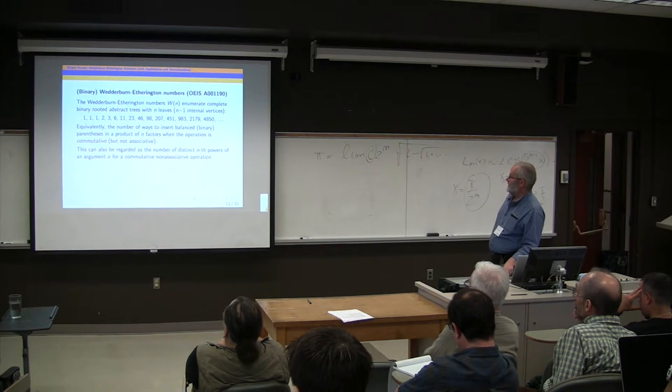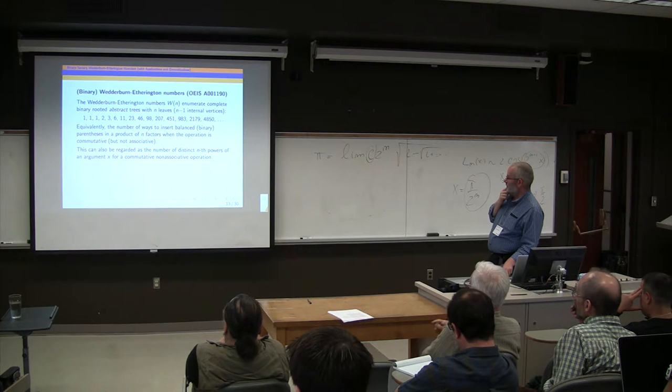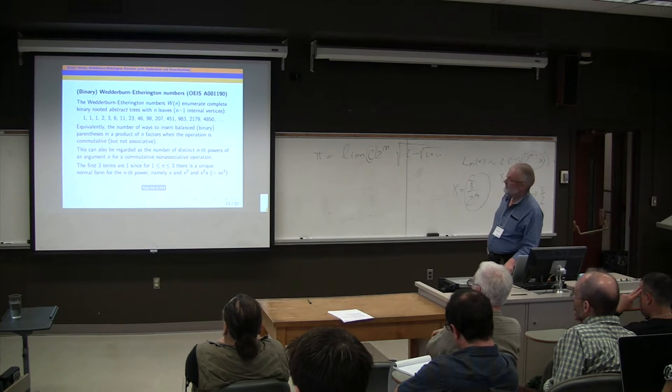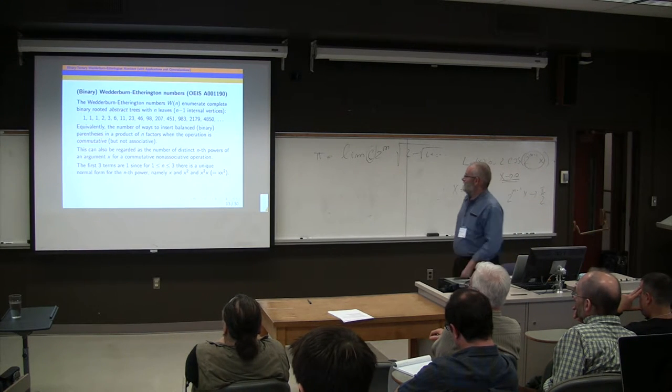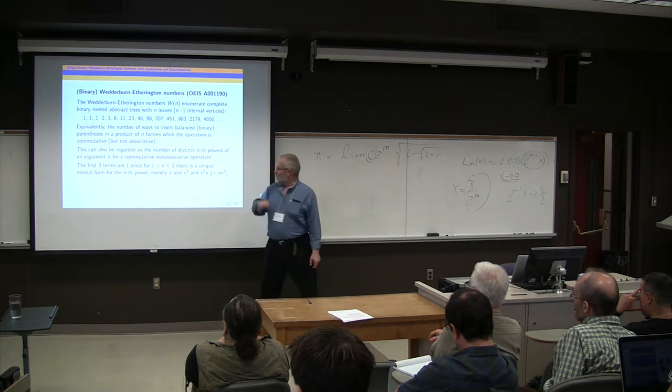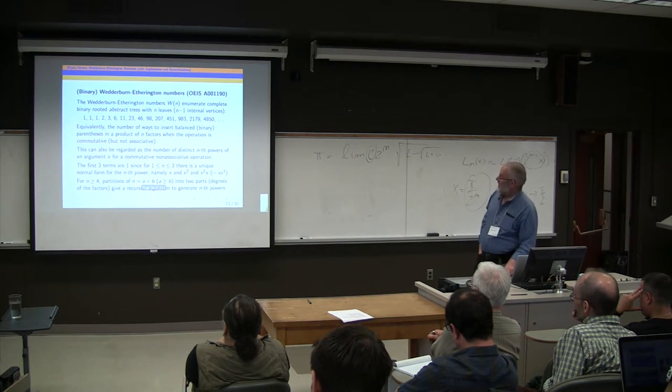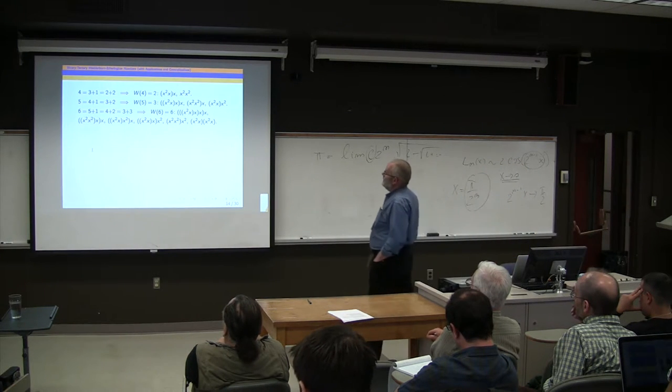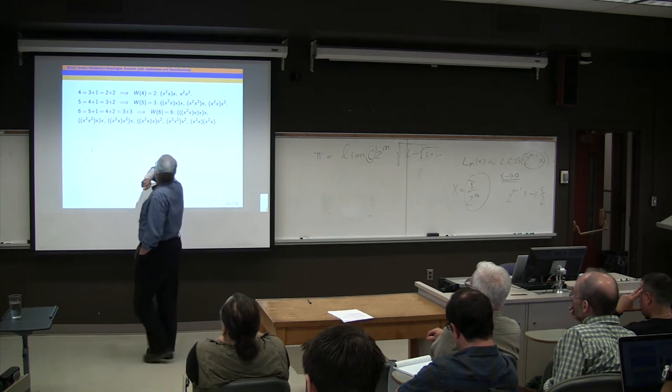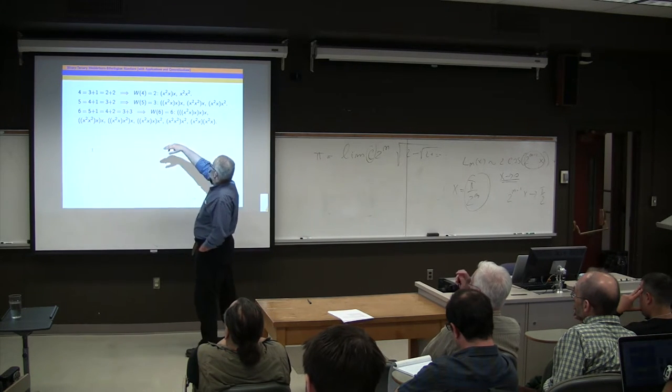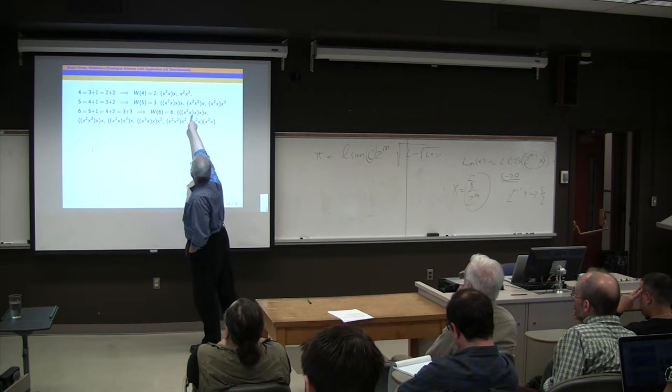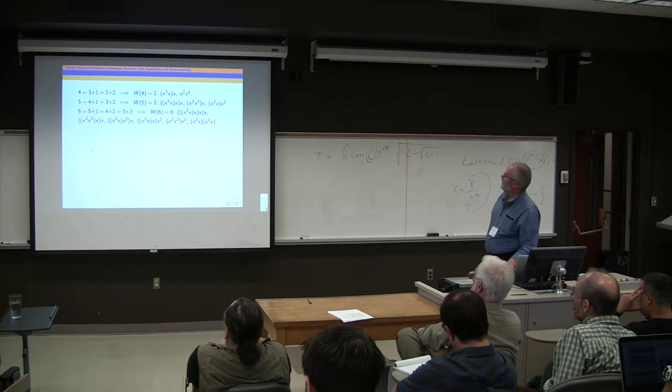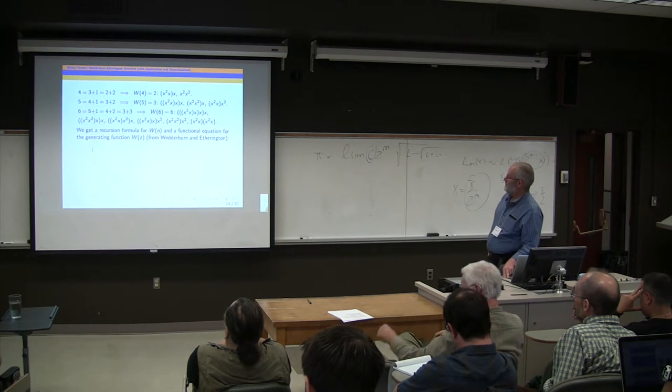Those are the numbers. You can also think of this as the number of distinct n-th powers of an argument x for a commutative, non-associative operation. So for first and second and third powers, there's only one possibility. But as soon as we go into higher powers, we get more and more possibilities depending on the partitions of the degree. Four is three plus one or two plus two. So we could either take a cube times x or a square times the square, and we get different cases. And if you just write down all those possibilities, you get the Wedderburn-Etherington numbers.